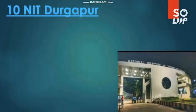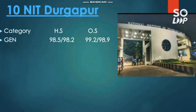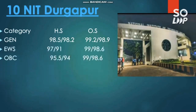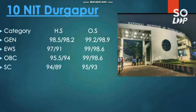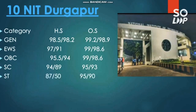The next NIT is NIT Durgapur. For General: 99.2 for male and 98.9 for female (other state students). EWS: 99 and 98.6 for male and female. OBC: 99 and 98.6 for male and female. SC: 95 for male and 93 for female. ST: 95 for male and 94 for female.